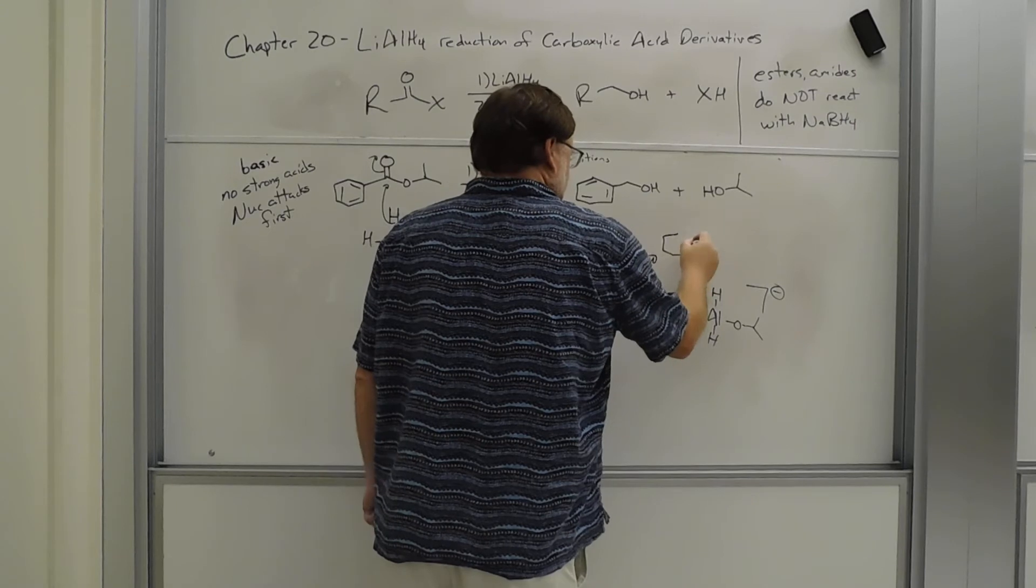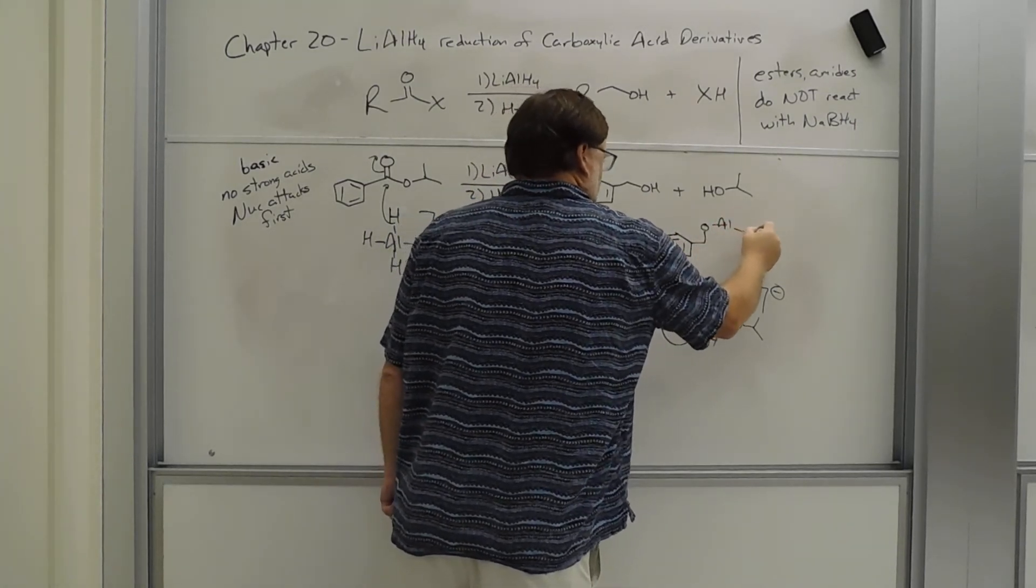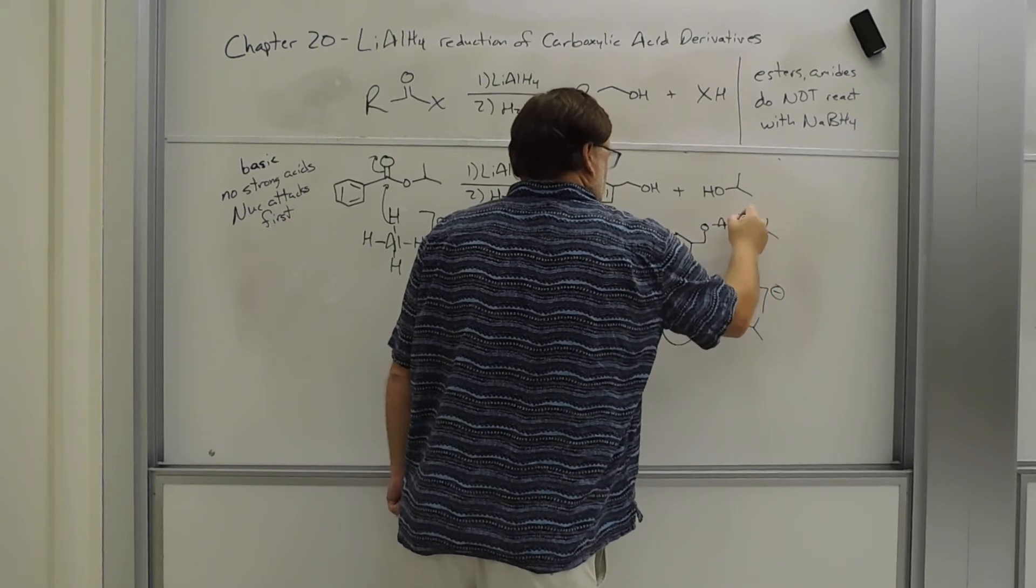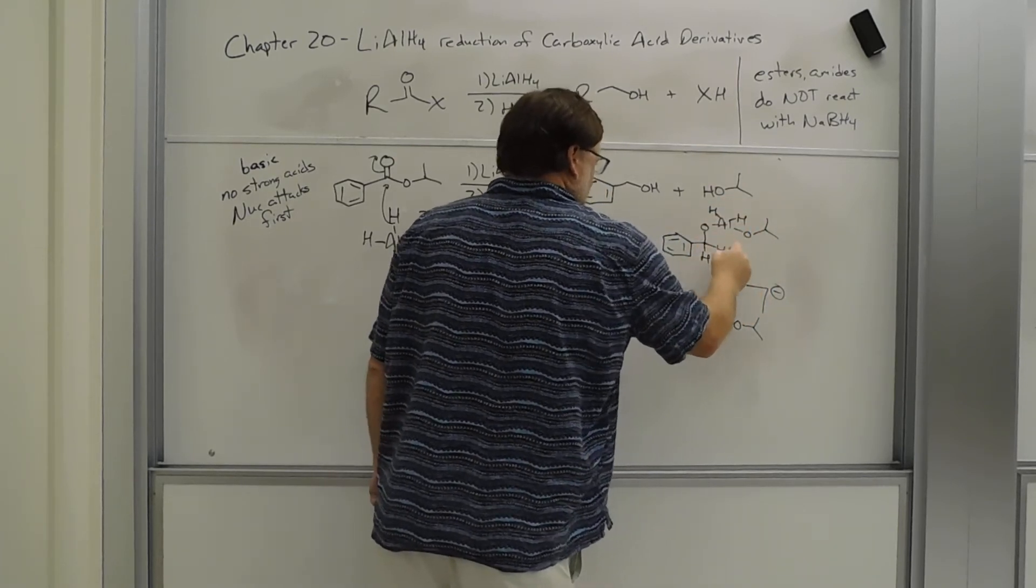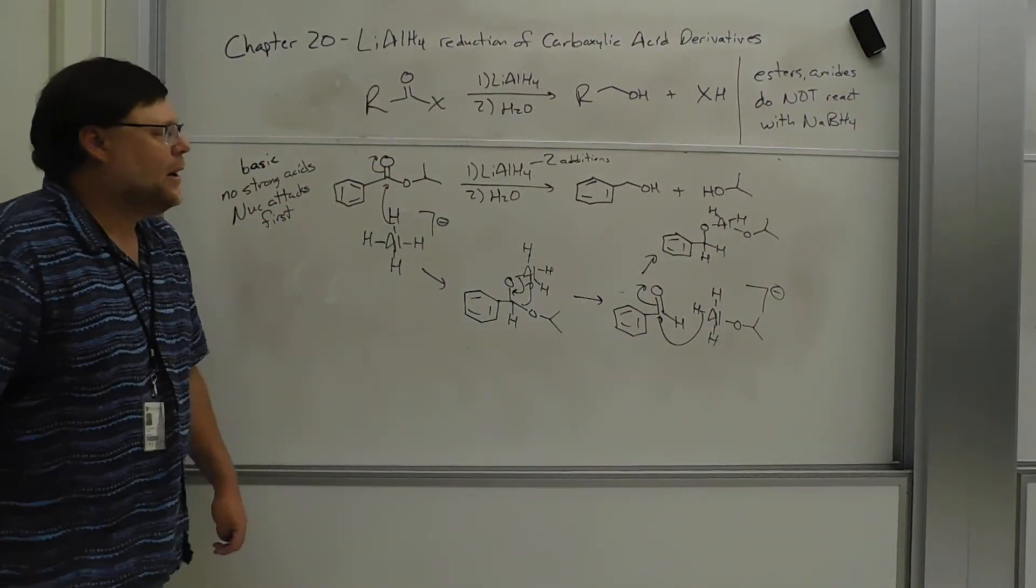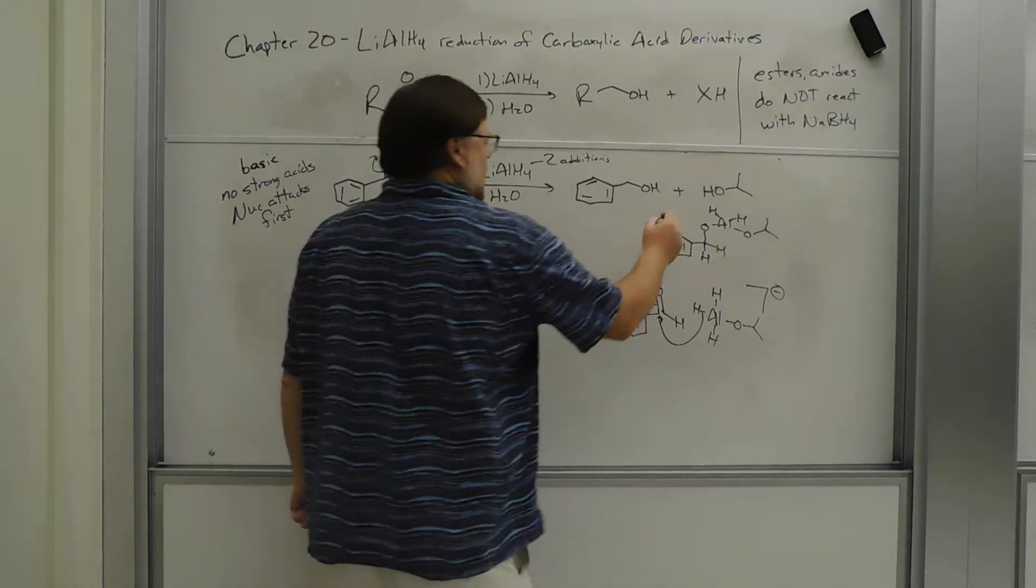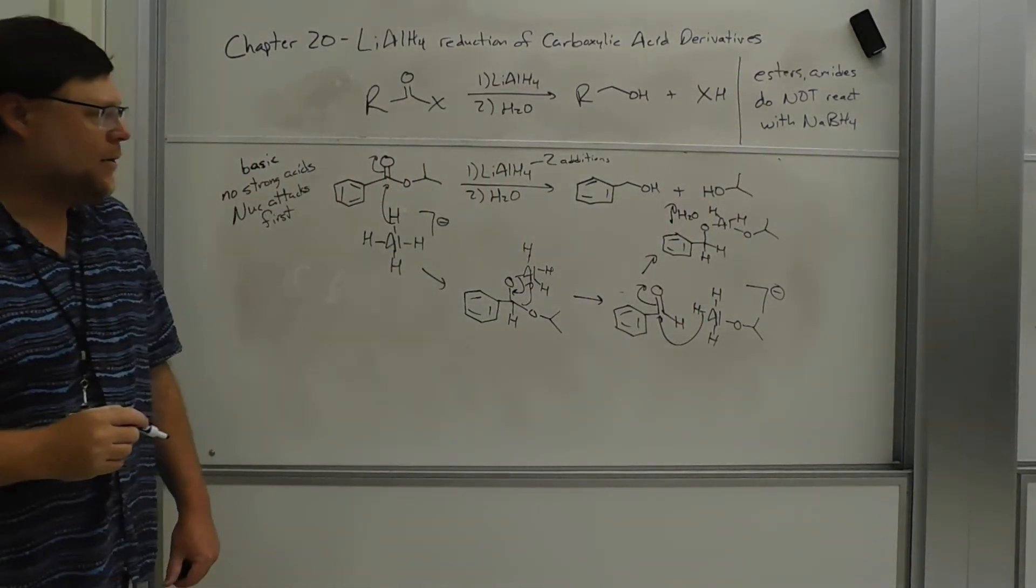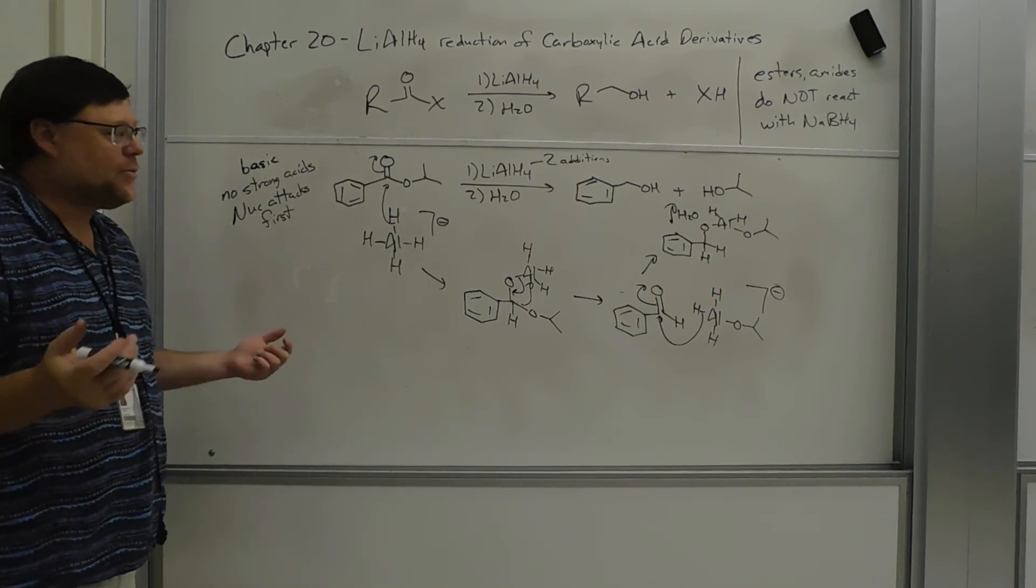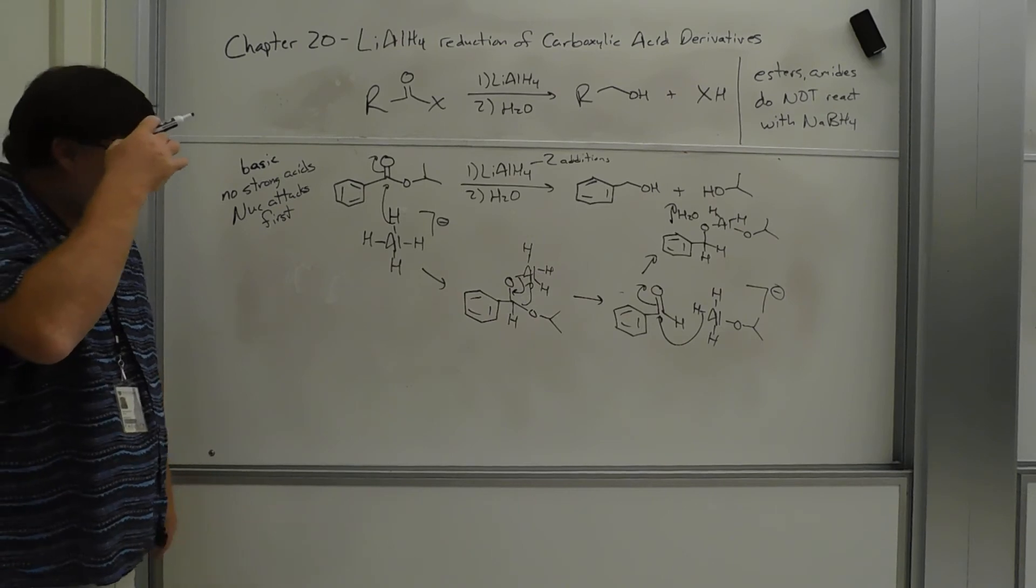And like I said, you end up now with a couple more H's here. Two H's added on there. And so what will happen when you protonate, right, when you protonate, both oxygens will take a proton from the water or whatever acid you provide, and then the aluminum will bond to the oxygen in the water.